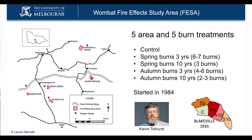Now I'll talk about fire and the impact of prescribed burning. My retired colleague Kevin Talhurst set up an experiment called the Wombat Fire Effects Study Area — FISA. He has five sites at Kangaroo Creek, Burnt Bridge, Musk Creek, Blakeville, and Barkstead with five different treatments: a control that's never been burned since 1935, and patches burned in spring every three years, in autumn every three years, in spring every 10 years, or in autumn every 10 years — mimicking the prescribed burns that DELWP does.